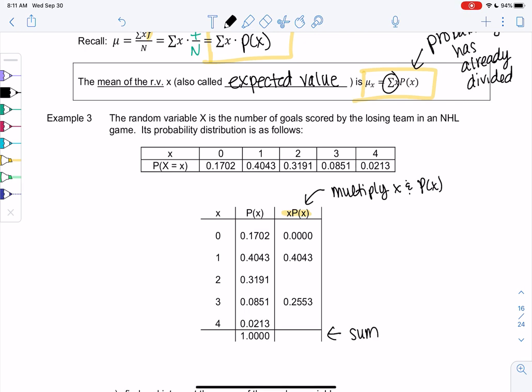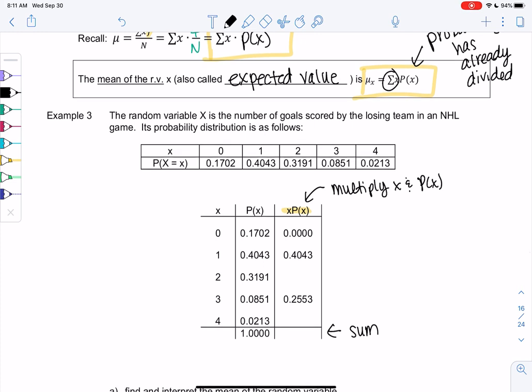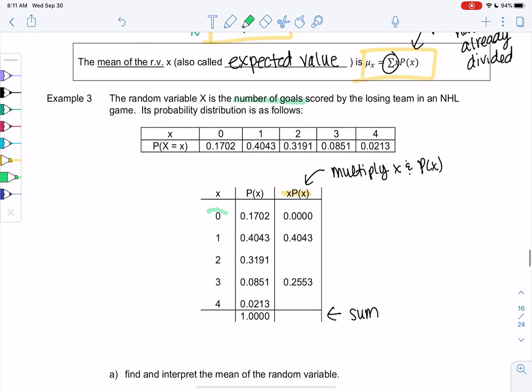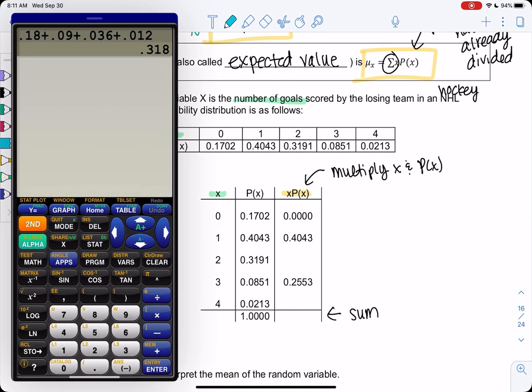And so we'll do that in this example. We're looking at the number of goals scored by a losing team in the NHL. So that's hockey. So how many goals do losing teams tend to make? And then we have the probability. So 17% of the time, the losing team makes zero goals. 40% of the time, the losing team makes one goal and so on. So what we're going to do is we're going to create a new column called x, p of x to find the average.